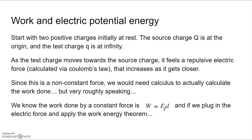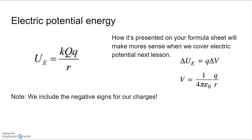Because of this inverse square law, the force is non-constant, so in order to compute the work done we would need to do some calculus, which this is an algebra-based course so we're not going to do so. But we can do a wave-of-the-hand calculation: we know the work done by a constant force follows W = Fd cosine θ. We plug in Coulomb's law — kq₁q₂/r² — for the electric force, and multiply by the distance r, which gives us kq₁q₂/r. So this is the formula for electric potential energy.